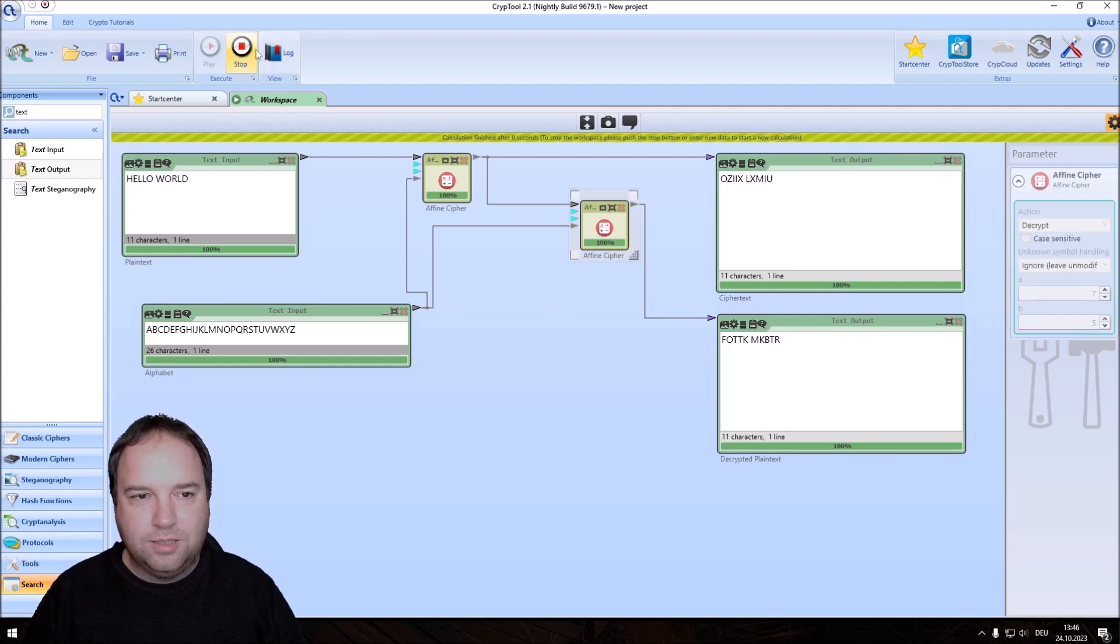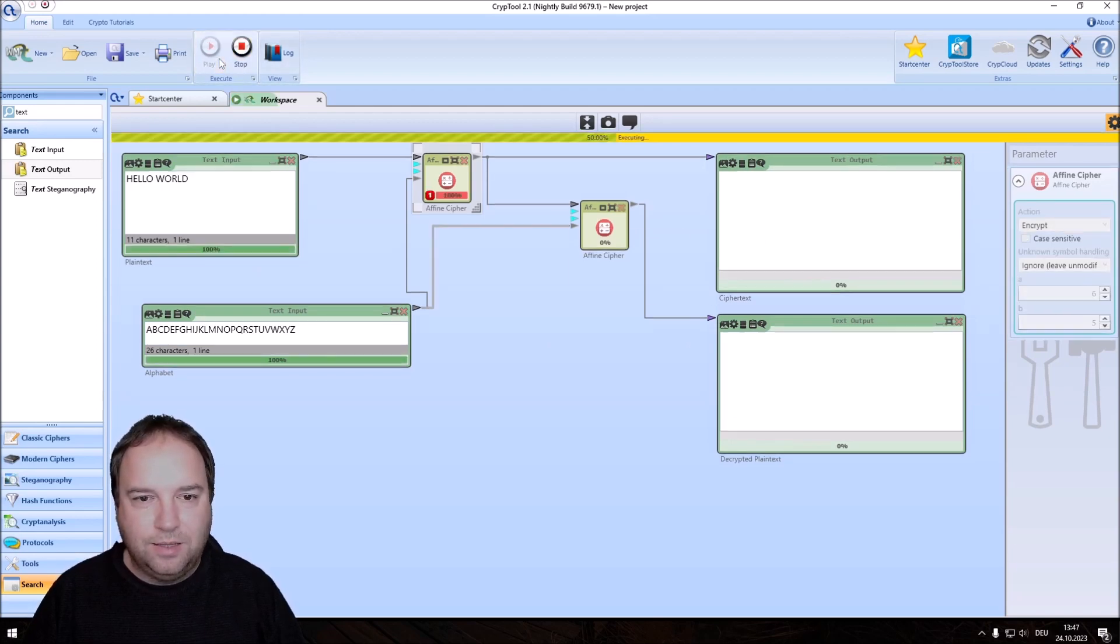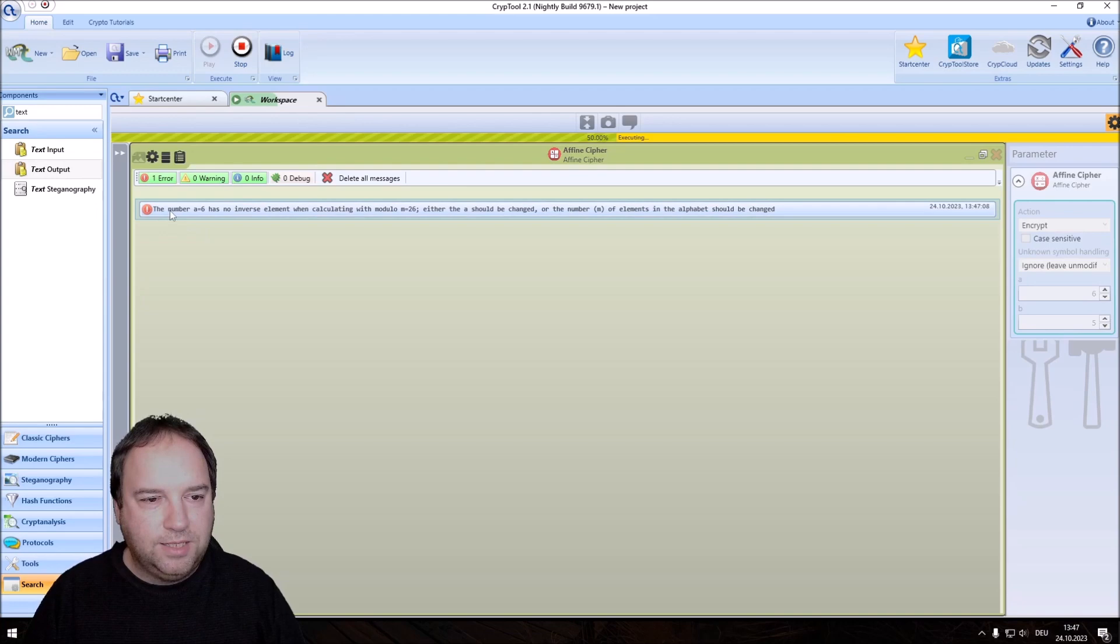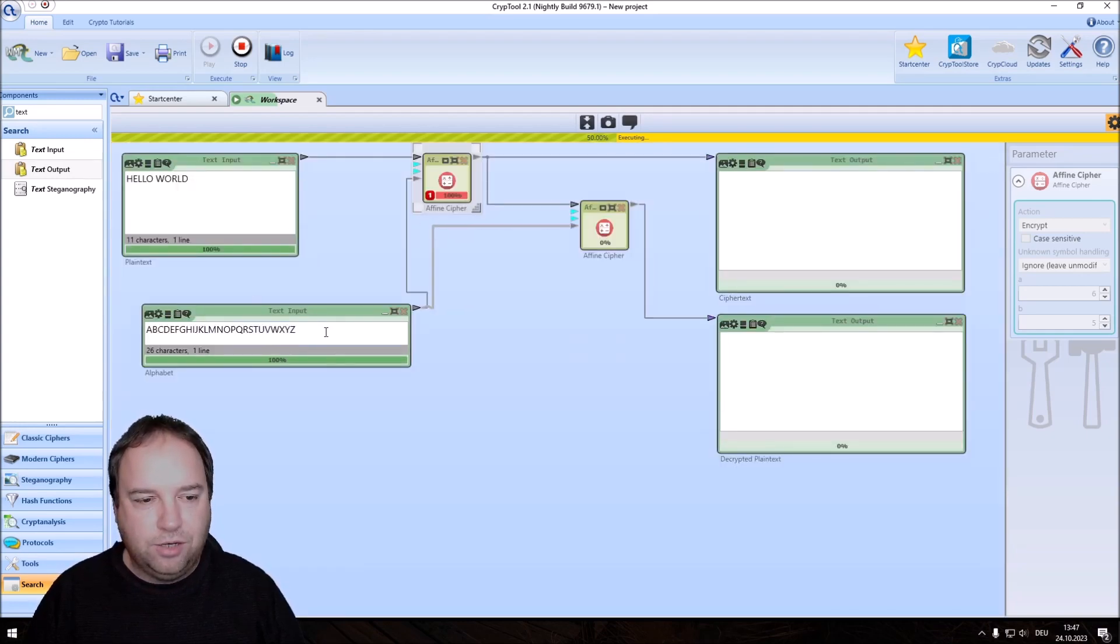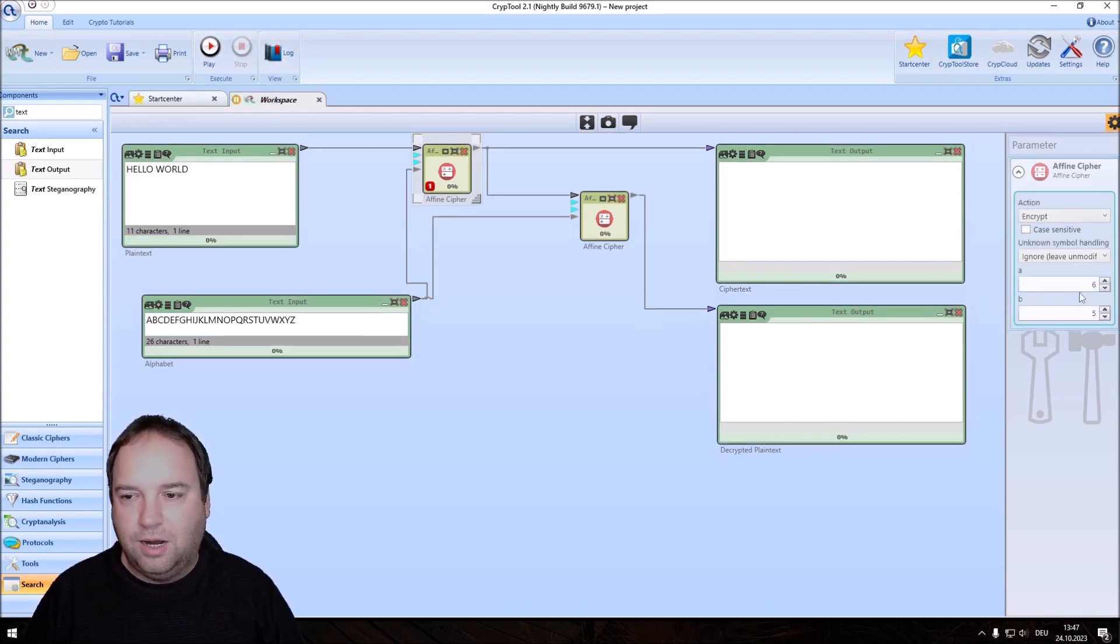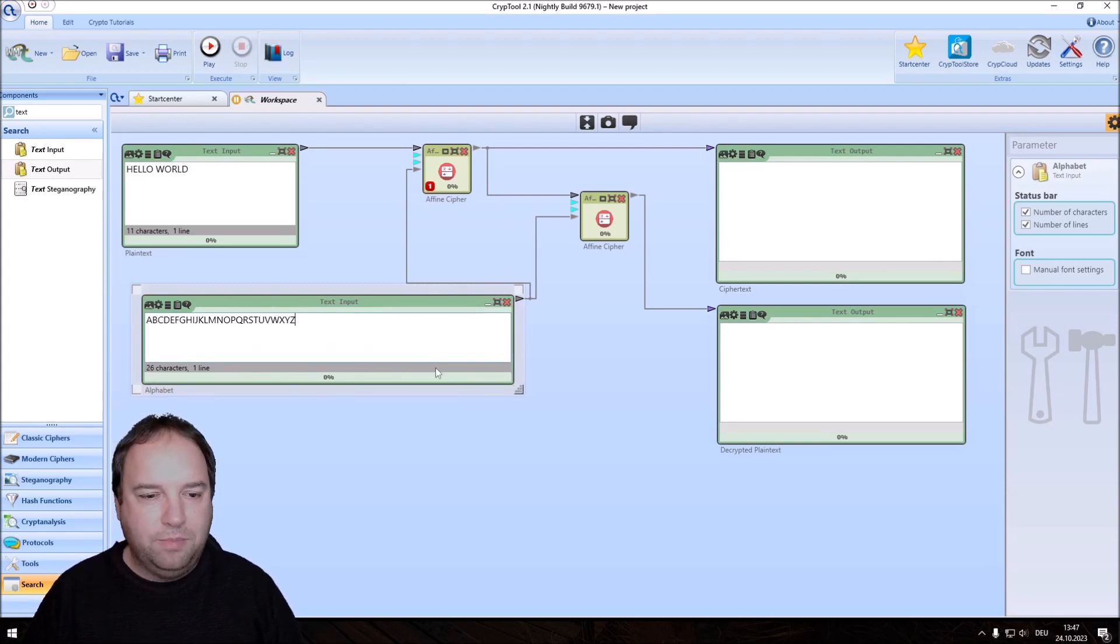And this component is really powerful. So at first, when you enter an a value for the multiplication that is not co-prime with the length of our alphabet, let's change this to 6 here, you will get an error message. You can open it and then you see the number 6 has no inverse element when calculating with modulo m equal to 26. And we either have to change our alphabet or we have to change our a value.